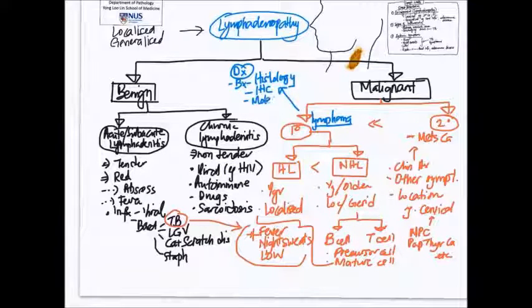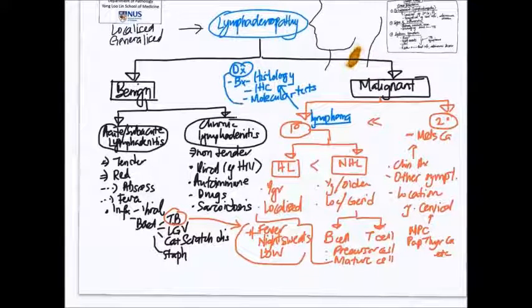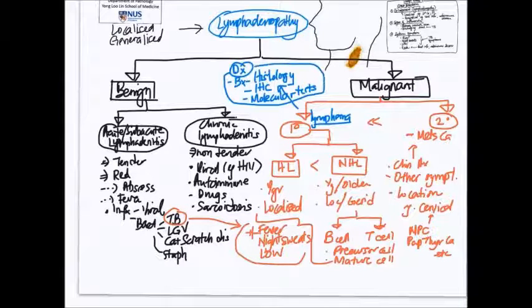The next tier is molecular testing. For this we know that there are certain specific translocations, for example in some lymphomas like Burkitt lymphoma. So we apply this molecular test to confirm our suspicion, and together these three types of testing on tissue will help us to confirm not only the type of lymphoma but also the specific subtype, and sometimes also provide prognostic information.